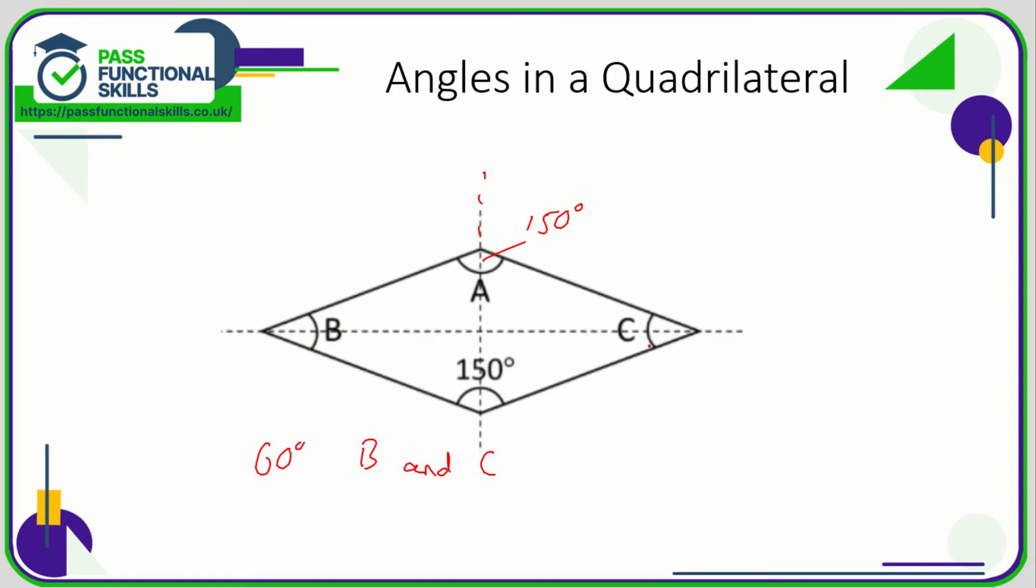So B and C are the same. So if they're the same, 60 degrees divided by 2 tells us what angle B is and angle C is, and both would be 30 degrees. So sometimes you can use lines of symmetry to work out unknown angles as well.